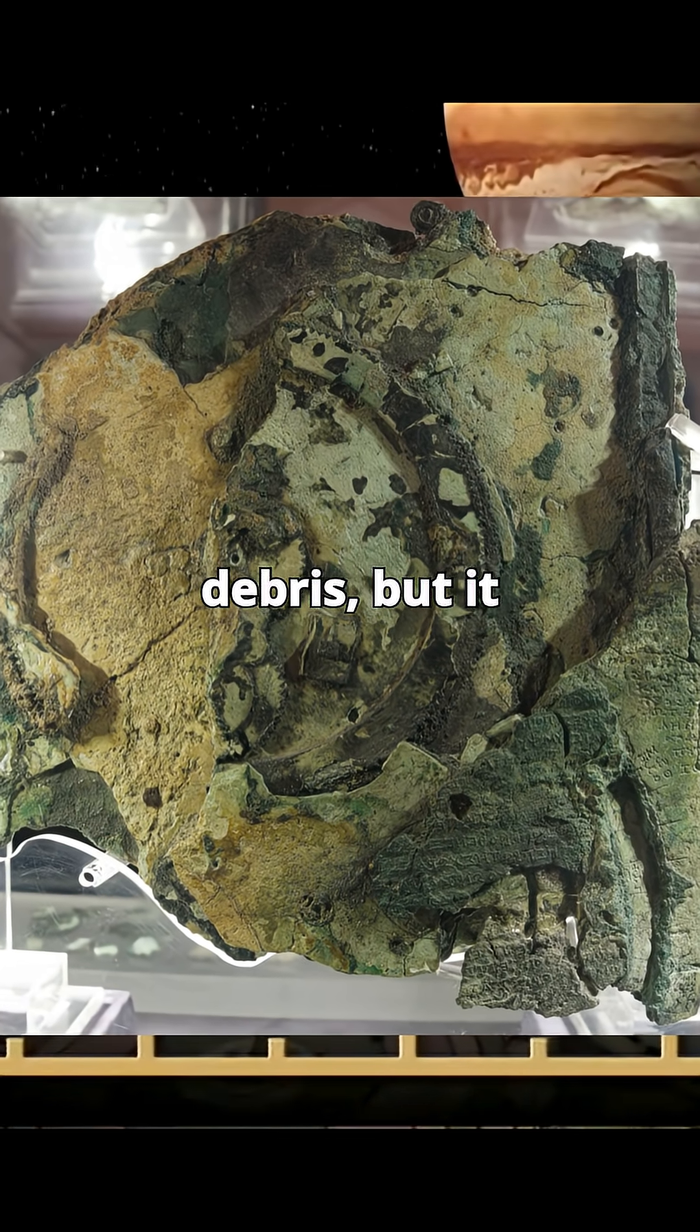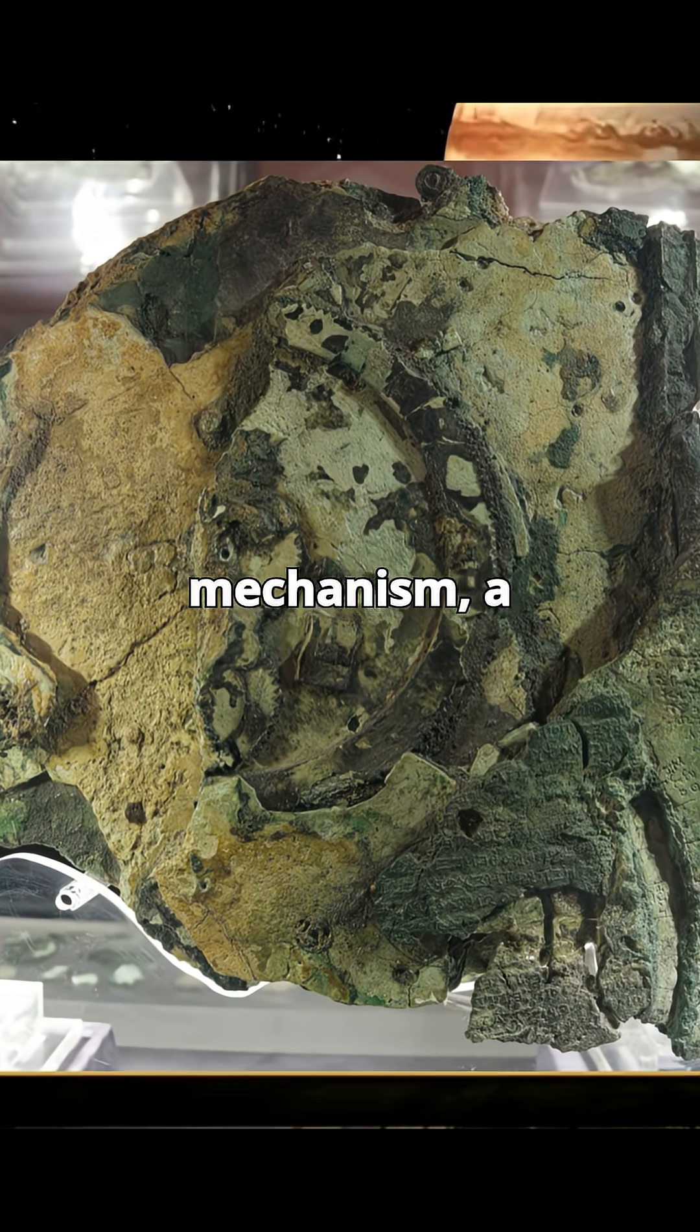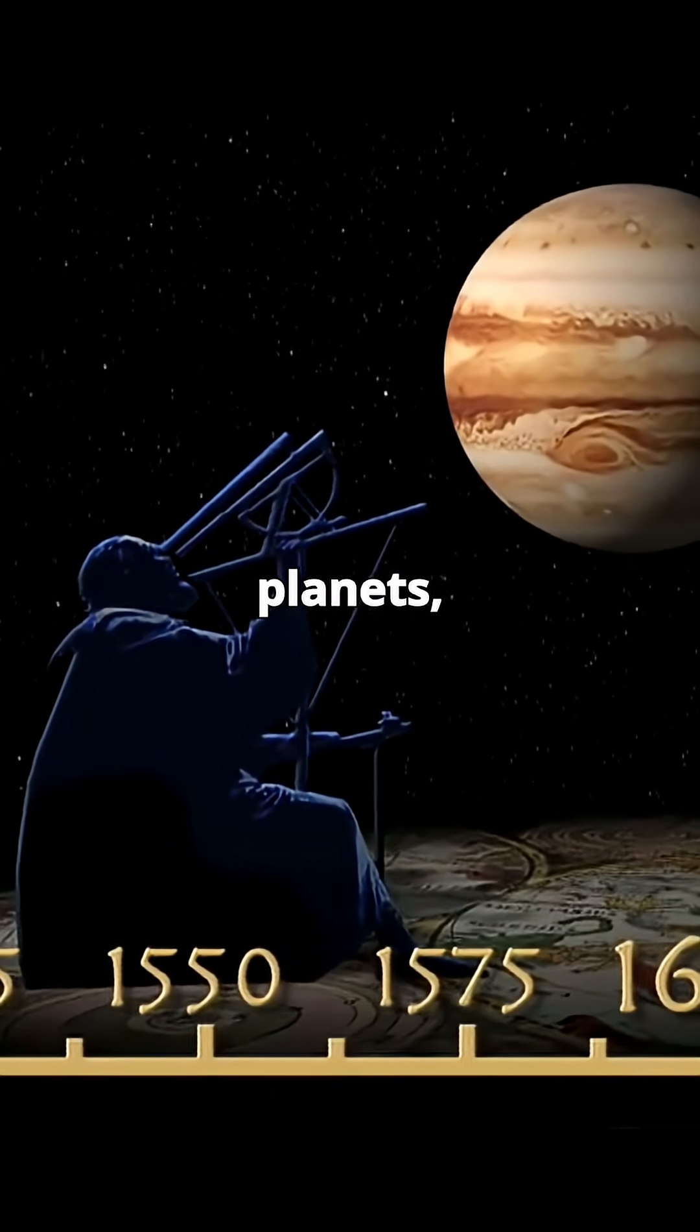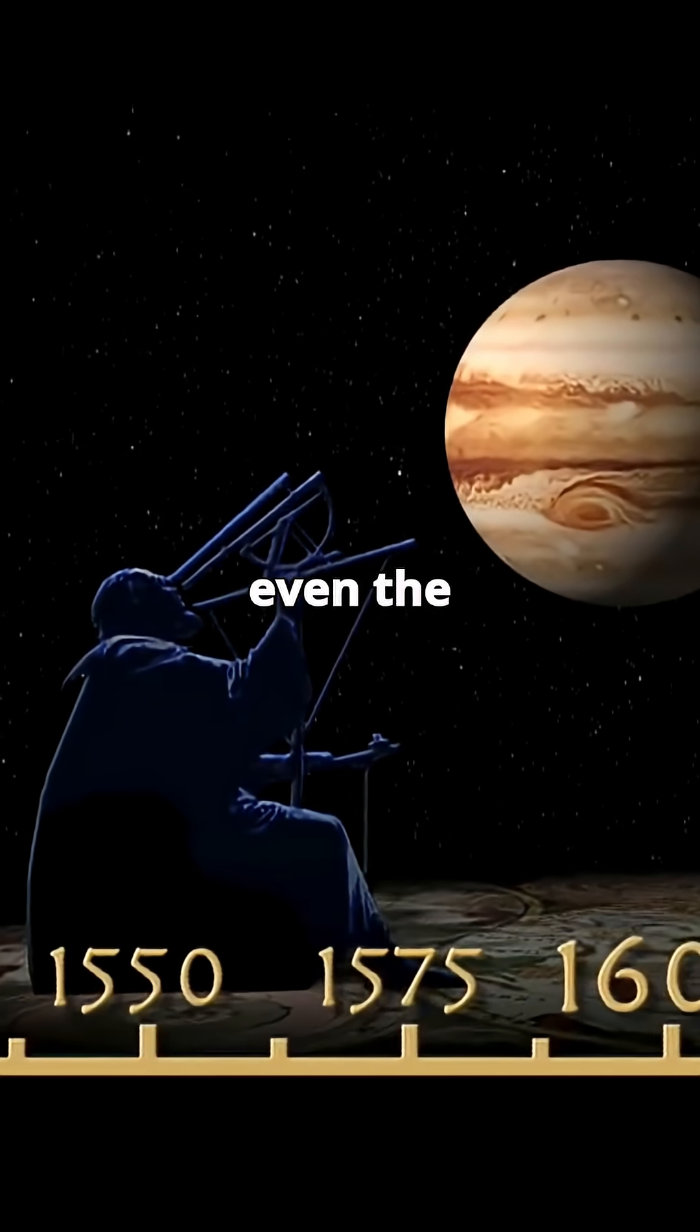It looked like debris, but it turned out to be the Antikythera mechanism, a 2,000-year-old device that could track the sun, moon, planets, eclipses, and even the Olympic Games.